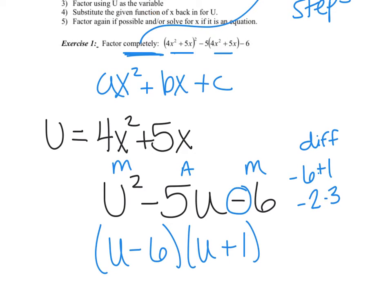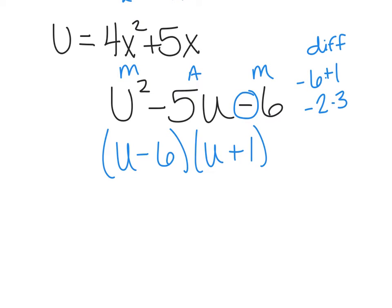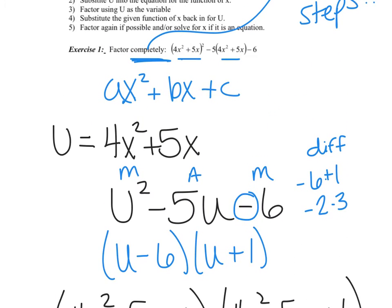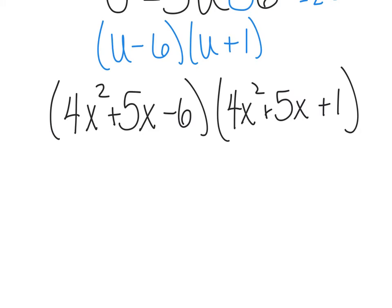I factored using the u. Now, it says substitute the given function of x back in for u. So, now I'm going to take whatever my u was and substitute it back in. 4x squared plus 5x minus 6 times 4x squared plus 5x plus 1. The last step says factor again if possible and or solve if it's an equation. Clearly this is not an equation. There's no equal sign, so I want to make sure we don't actually solve. We just have to factor again.